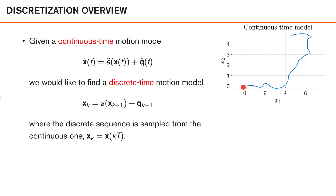What we'd like to do is to find a discrete time counterpart to this time continuous model, which we write as xk, where xk is our discrete time sequence. A key thing to note is that our discrete time sequence contains samples from our continuous time sequence. We sample our continuous time sequence at time 0, T, 2T, 3T, and so on. Those samples become our discrete time sequence, where k denotes our discrete time index and capital T is our sampling interval.